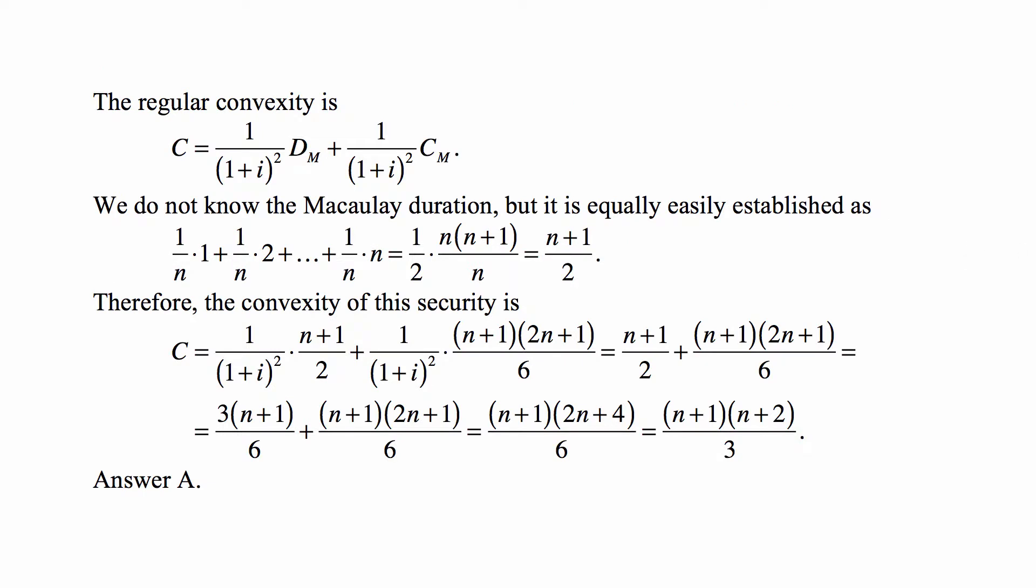But the question is not about Macaulay convexity, it's about regular convexity. And regular convexity is equal to one over one plus i squared times Macaulay duration plus one over one plus i squared times Macaulay convexity. Now we don't know Macaulay duration, but that's pretty quickly calculated. It's just a weighted average of times of payments. So one over n times one plus one over n times two and so on up to n.